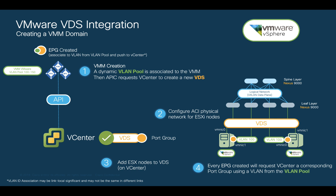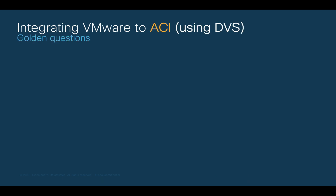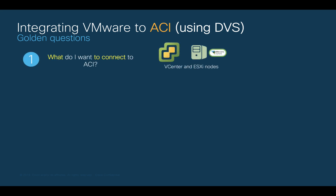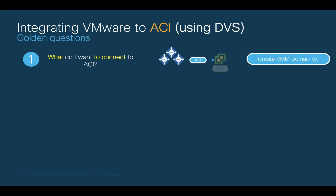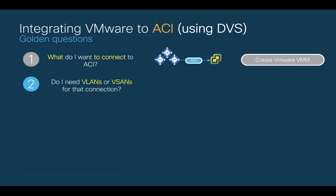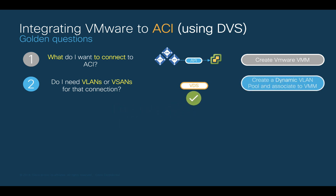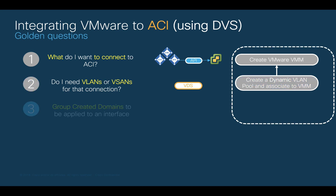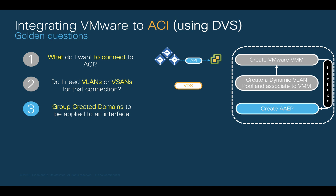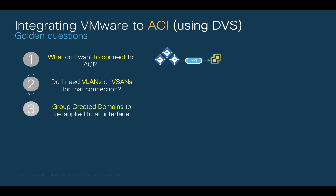Let's now see all this in action. We'll start with our traditional golden questions. First, what do we want to connect to ACI? The answer is vCenter and ESXi nodes. Therefore, we will create a VMware VMM domain which will request vCenter to create a standard VDS on its behalf. The second question is, do I need VLANs or VXLANs? I will need a dynamic VLAN pool and I will include VLAN 2110 to 2130. Feel free to use your own VLAN IDs. The third step is to create an AEP and assign my VMM domain in there. Let's perform those three steps now on the GUI.